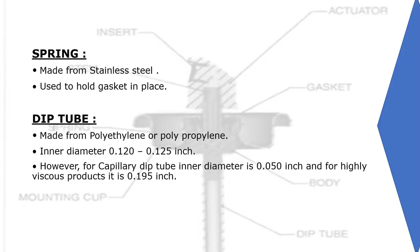The spring is made from stainless steel and is used to hold the gasket in place. The dip tube is made from polyethylene or polypropylene with a diameter of 0.120 to 0.125 inch. For capillary dip tubes the diameter is 0.050 inch, and for highly viscous products it is 0.195 inch.